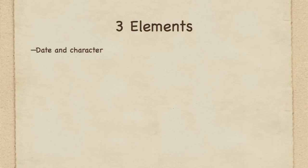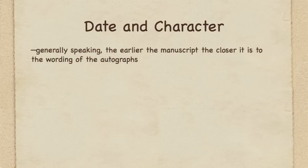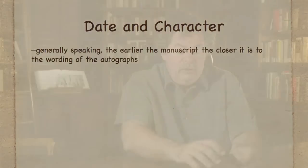When it comes to external evidence, it has three components. One is the date and character of the manuscripts. The second is known as genealogical solidarity. And the third is known as geographical distribution. Date and character has to do with an examination of each individual manuscript in terms of when it was written and how good of a witness it is to its own group of manuscripts — sometimes known as text types or families. Generally speaking, we would say that the earlier the manuscript, the more likely it is to go back to the original wording of the text. So date is an important factor.